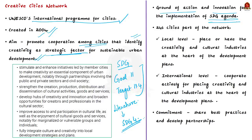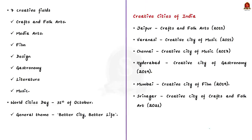As per UNESCO, 246 cities around the world are part of this network. At the local level, the objective is to place creativity and cultural industries at the heart of urban development plans. At the international level, these cities cooperate actively for the same purpose. By joining this network, cities commit to sharing their best practices and developing partnerships involving the public and private sectors as well as civil society. The Creative Cities Network majorly covers seven creative fields: crafts and folk art, media arts, film, design, gastronomy, literature, and music.